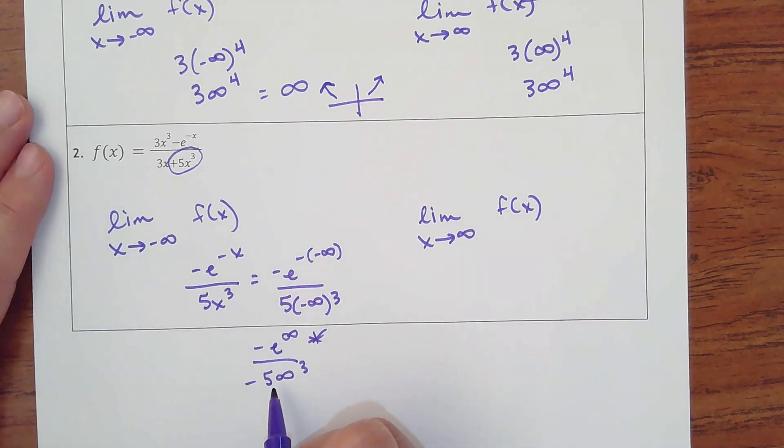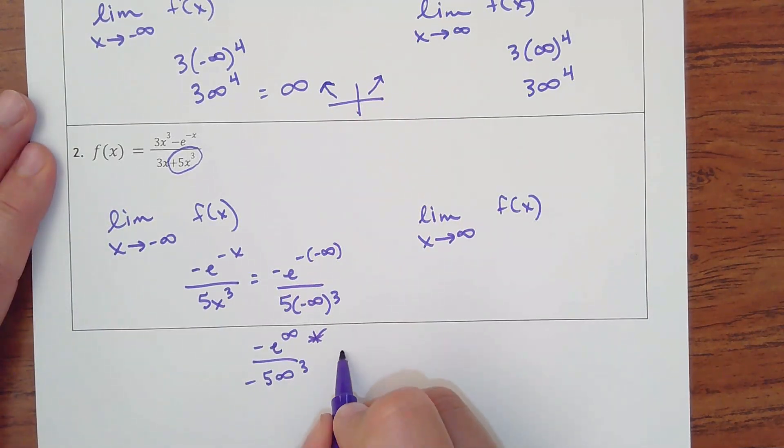So that's going to be no horizontal asymptote from that one. So we'll just say it does not exist. Or I could think about this being negative divided by negative positive. It's going up.